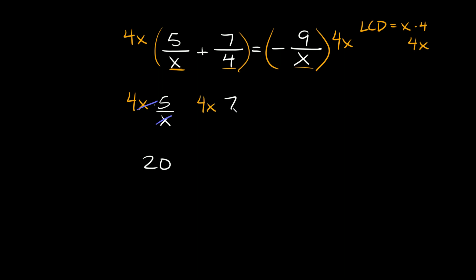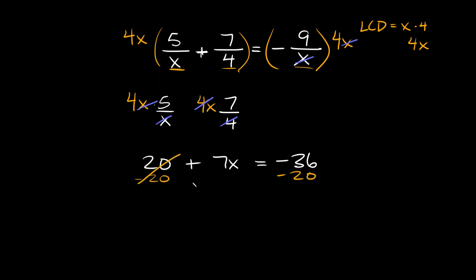4x times 7 over 4 — the 4 on top and the bottom cancel out, so we're left with x times 7, which is negative, so that's equal to negative 7x. So then we're just solving for x. Let's subtract 20 from both sides. Those cancel out, so we're left with 7x is equal to negative 56, which means x is equal to negative 8.